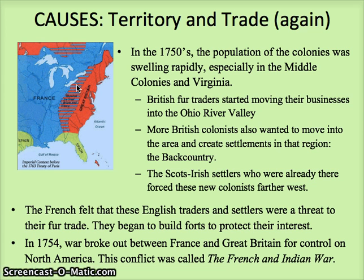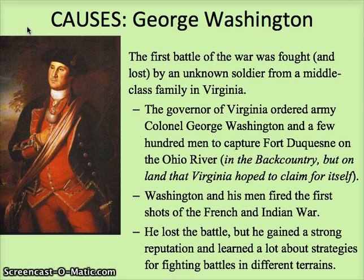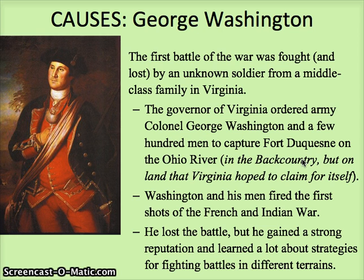In 1754, this built up to the point that war broke out between France and Great Britain. A little more about how the war started: you may know this guy — George Washington, a very young George Washington in British Army uniform. The first battle of the war was fought, and actually lost, by this then-unknown man from a middle-class family. He'd been ordered by the governor of Virginia to take a few hundred men and capture one of those French forts in the backcountry, as Virginia was hoping to claim that land for itself. Washington fired the very first shots at Fort Duquesne. He lost the battle, but gained a strong reputation and learned a lot about strategies for fighting in this kind of territory.